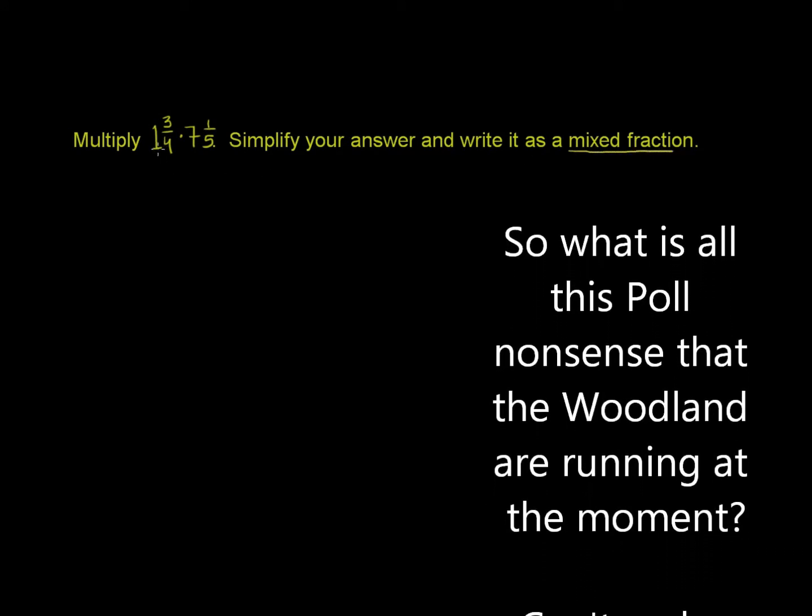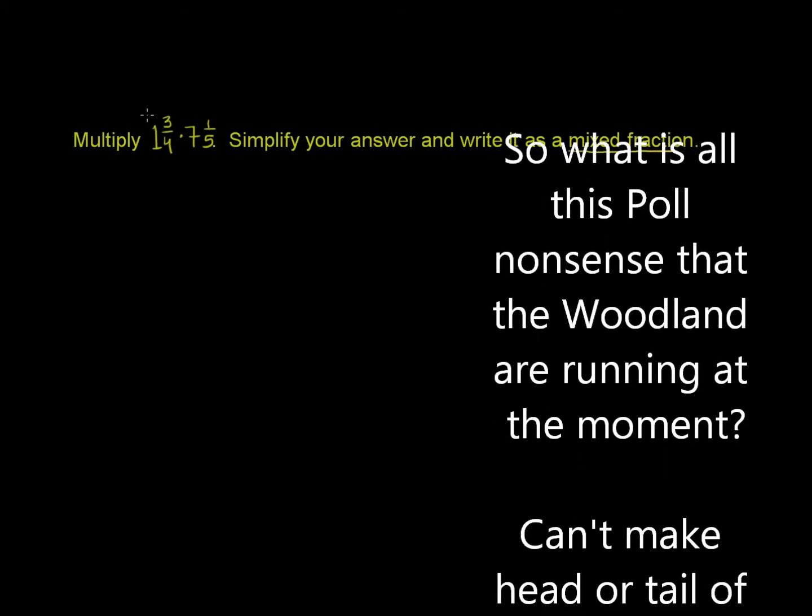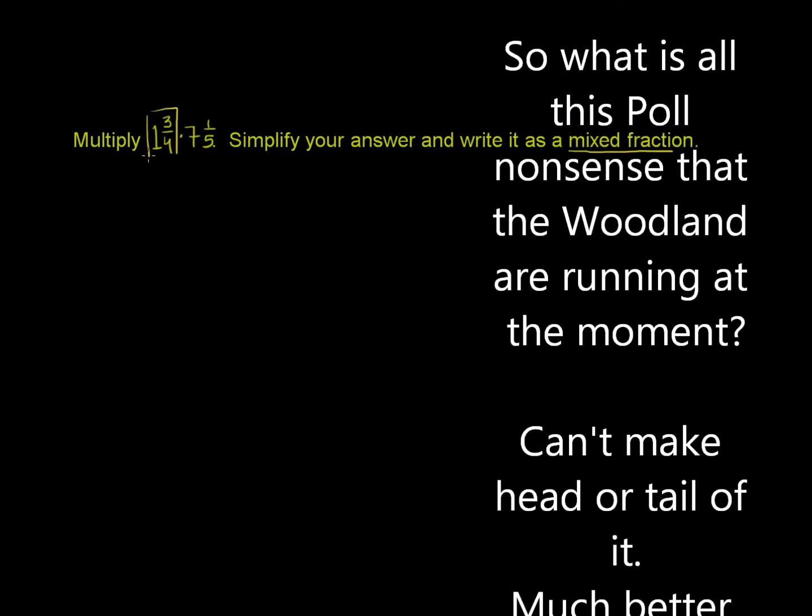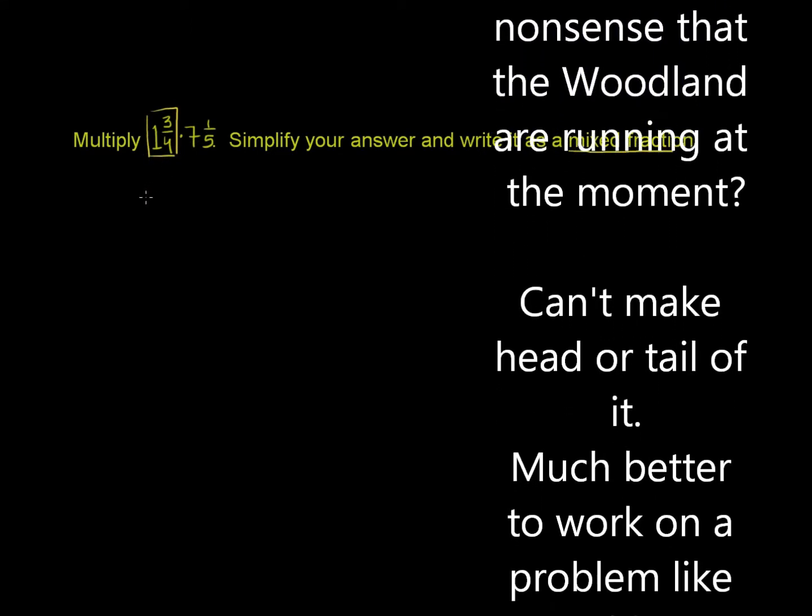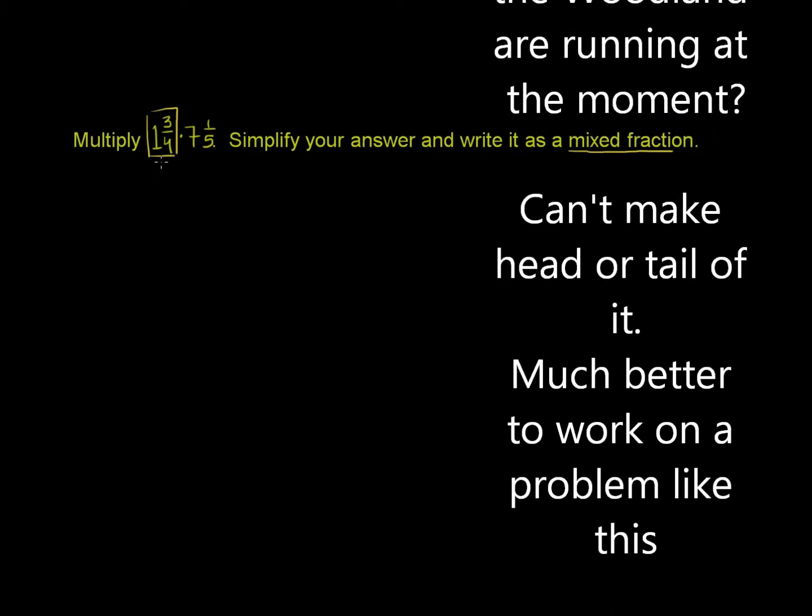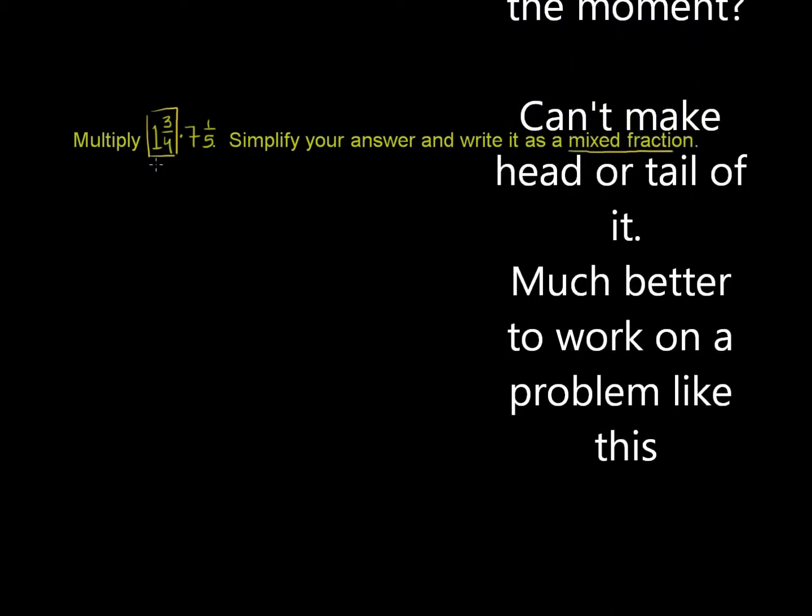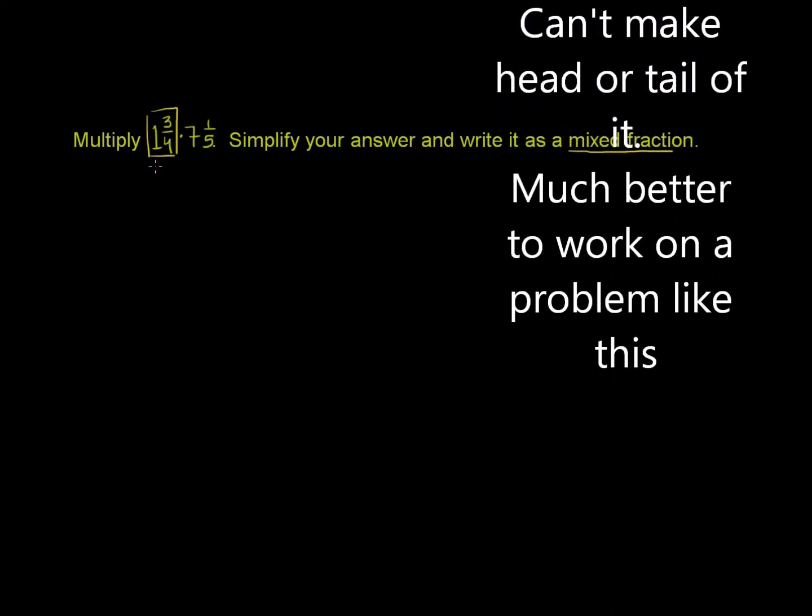So the first thing we want to do is rewrite each of these mixed numbers as improper fractions. It's very difficult, or at least it's not easy for me to directly multiply mixed numbers. One can do it, but it's much easier if you just make them improper fractions.